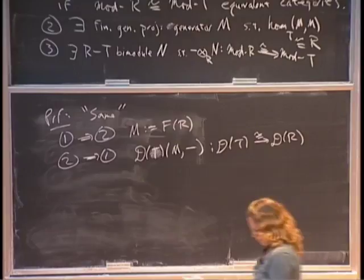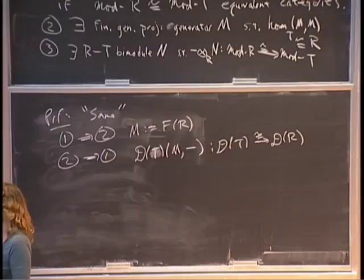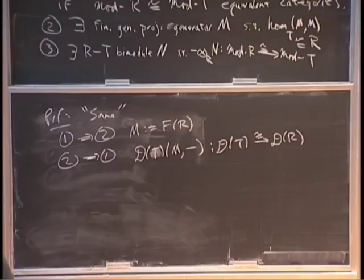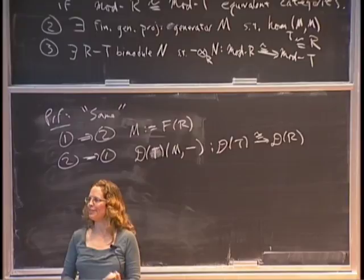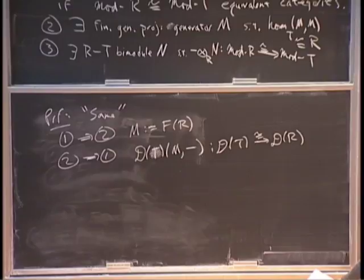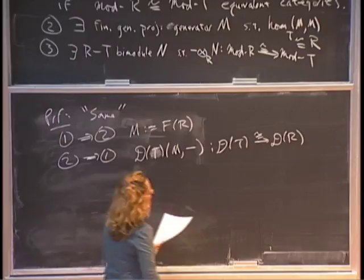M needs to be compact so it preserves sums, and a generator so that after we've arranged for M to go to R and R to go to M, all other objects built out of sums and triangles are also preserved. The main thing you need to figure out is how to set up exactly the same situation as in the classical case. I'm going to do the bimodule condition in the spectra case — rings are a special case of spectra, so we'll see that there.